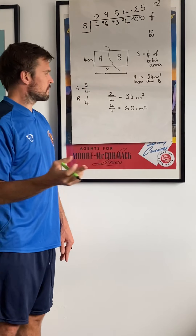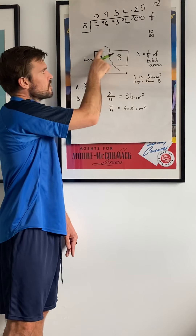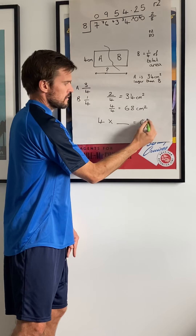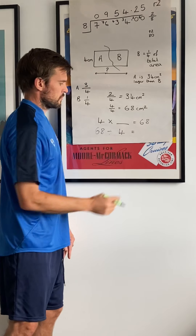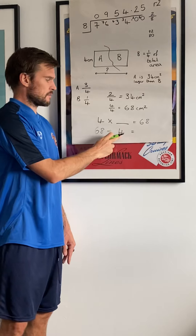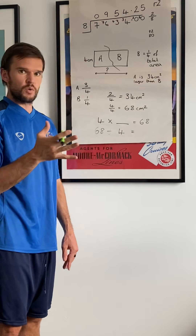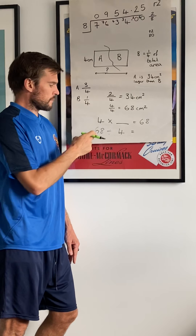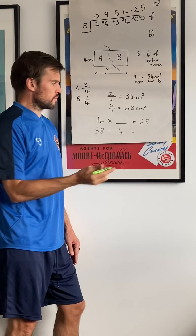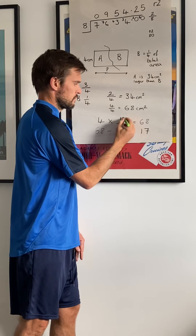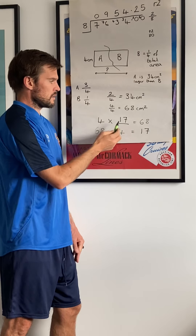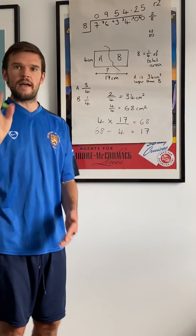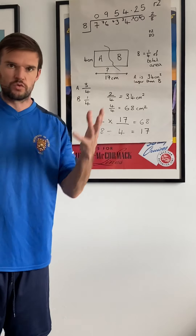Once I've done that, I then say: if the total area is sixty-eight, four times what equals sixty-eight? Well, it's sixty-eight shared by four. What I do is think to myself: ten times four is forty, twenty times four is eighty, so it's got to be between that. I know fifteen times four is going to be sixty — now that gets me closer. Because I know that two lots of four is eight, so fifteen plus two gives me seventeen. Check it: four times ten is forty, four times seven is twenty-eight — put it together, sixty-eight. So we have seventeen centimeters. Jot everything down, do your calculation.